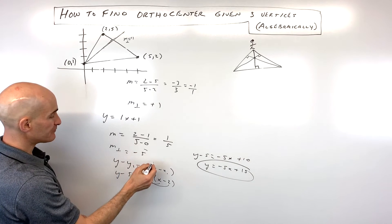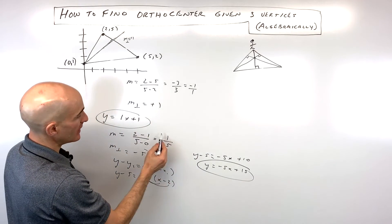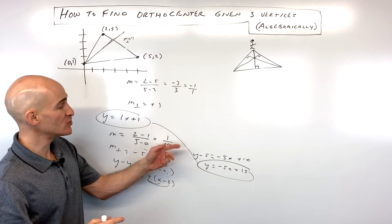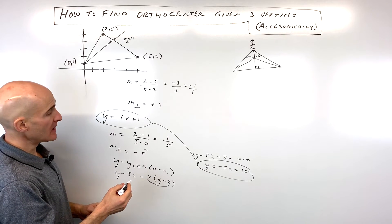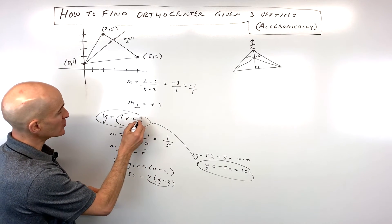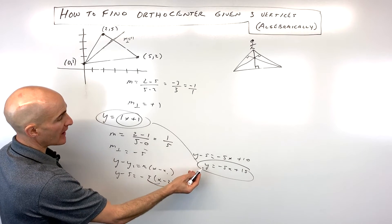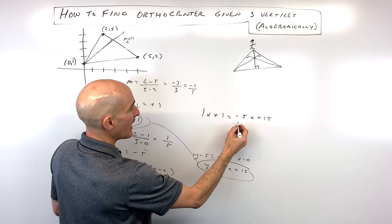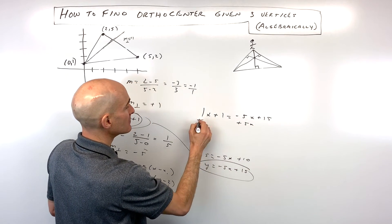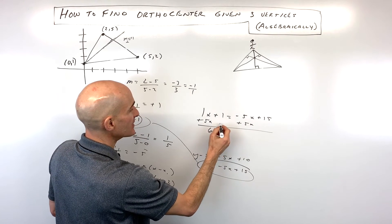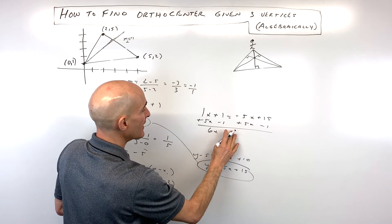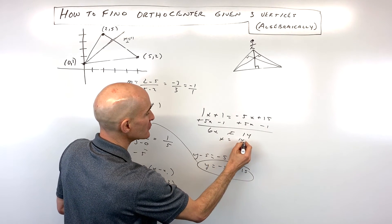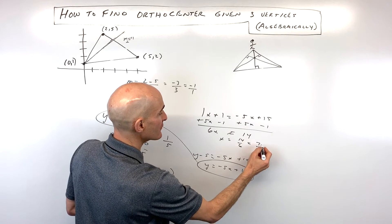We now have two equations: y = x + 1 and y = -5x + 15. We need to find their point of intersection using substitution. Putting x + 1 in place of y gives us x + 1 = -5x + 15. Adding 5x to both sides gives 6x. Subtracting 1 from both sides gives 6x = 14. Dividing by 6: x = 14/6, which reduces to 7/3.